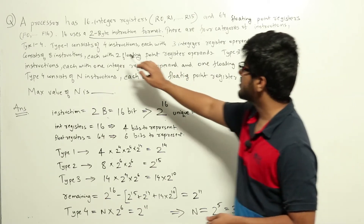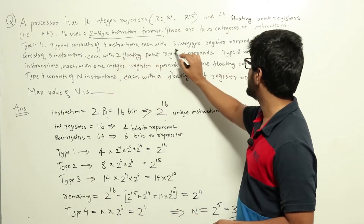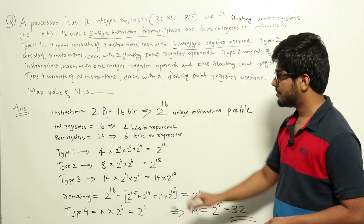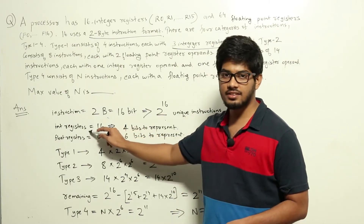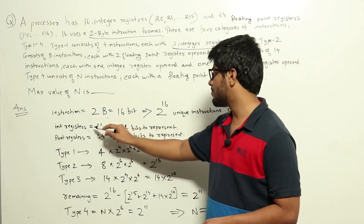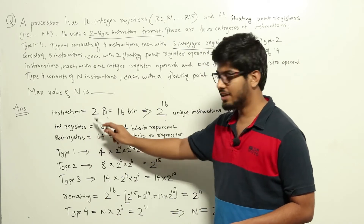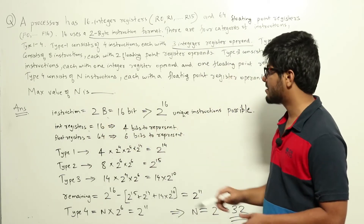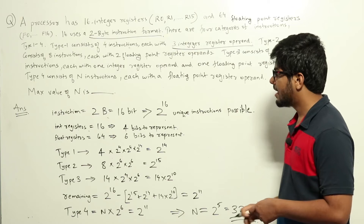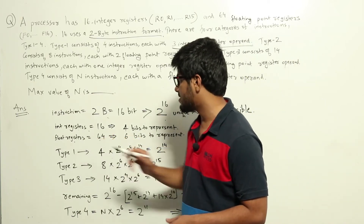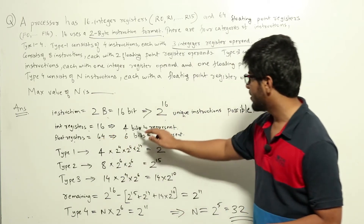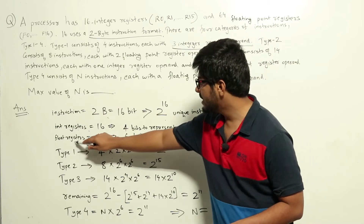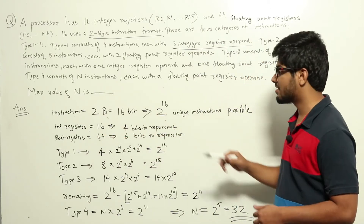Type 1 consists of four instructions each with three integer register operands. There are 16 integer registers, so representing each register requires 4 bits out of the instruction. There are 64 floating point registers, so representing each floating point register requires 6 bits out of the instruction.